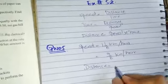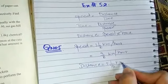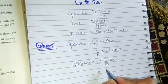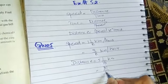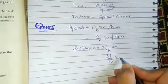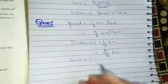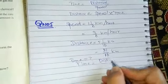Distance is equal to 5, 4, 1 over 16 km, which becomes 81 over 16 km. We have to know about time. The formula of time is distance divided by speed.